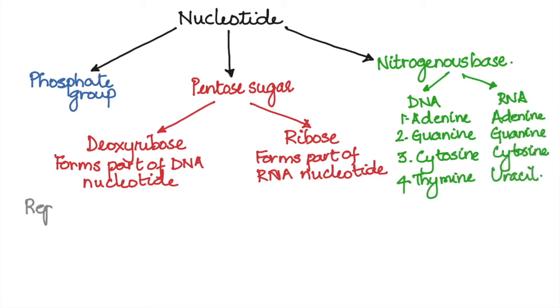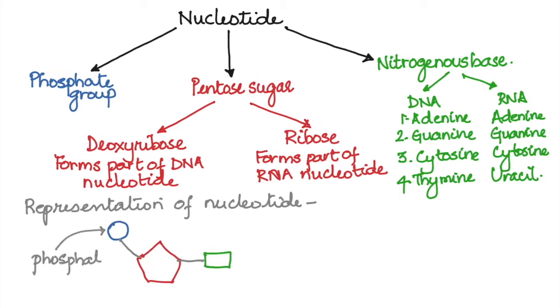So this forms the basic nucleotide. Now let us see how we represent this structure. Nucleotide is represented using circle, pentagon and a square. These are then connected by bonds. The circle here represents the phosphate group, the pentose sugar is represented by the pentagon, and the square represents the nitrogenous base.